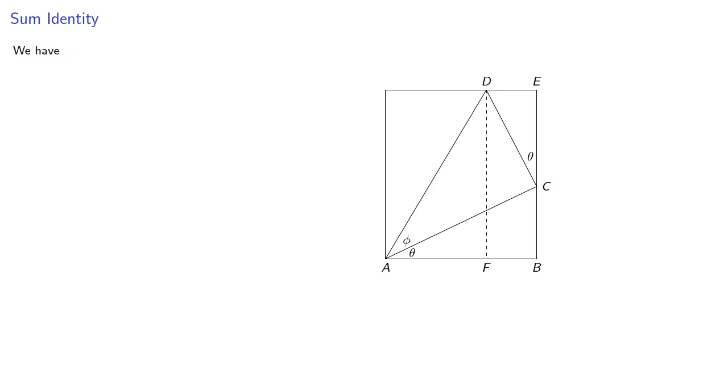DF is the same length as BE, and that's CE plus CB. Now let's consider CB that's in this right triangle, and so we know that sine of theta is CB over AC, or CB is AC sine theta.